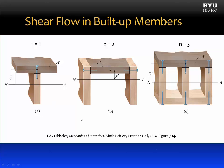For the three built-up beams: in beam A, there is one fastener crossing from the A-prime area into the rest of the beam, so N equals one. In beam B, there are two fasteners crossing into the A-prime area, so N is two. And in beam C, there are three fasteners crossing through the A-prime boundary, so N is equal to three.